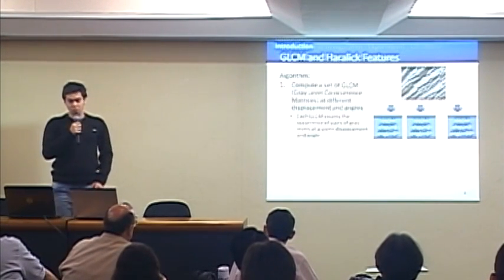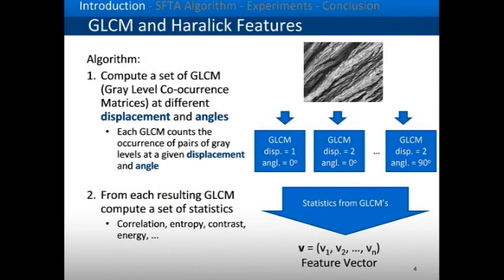A well-known method for texture extraction is Haralik features. To extract them, we start with a grayscale image and compute a set of gray level co-occurrence matrices, each at different displacements and angles. Then we build our feature vector by computing statistics from each matrix, such as correlation, entropy, contrast, and energy.